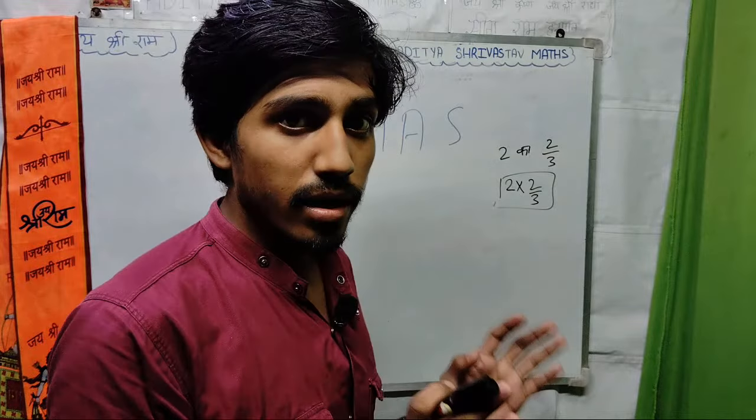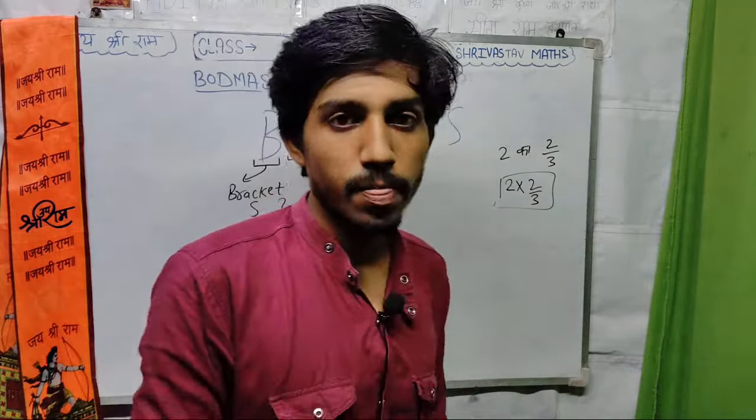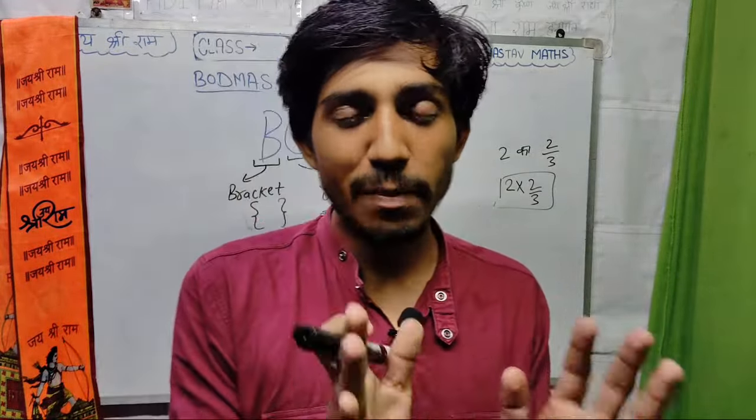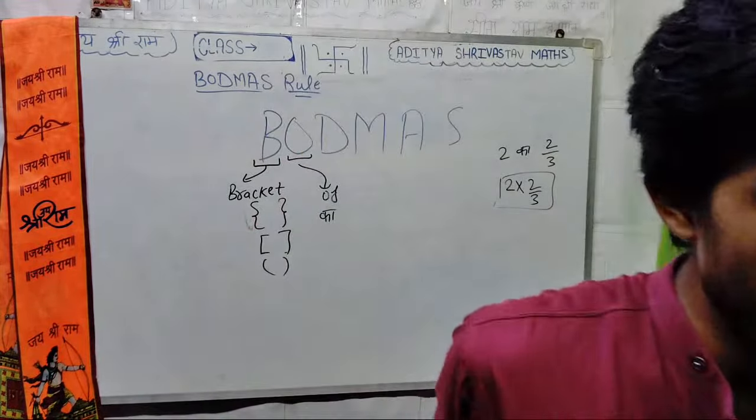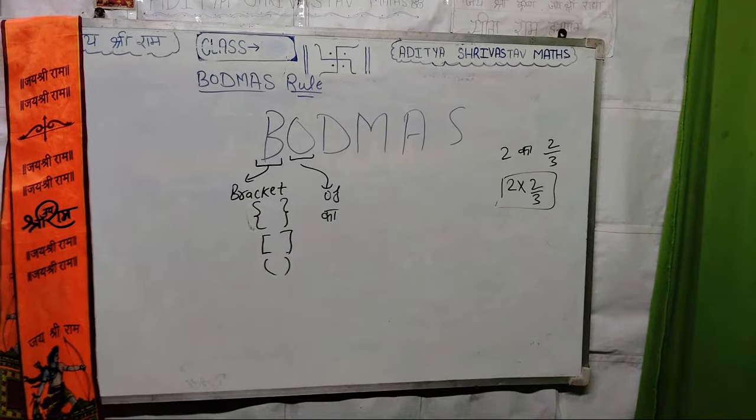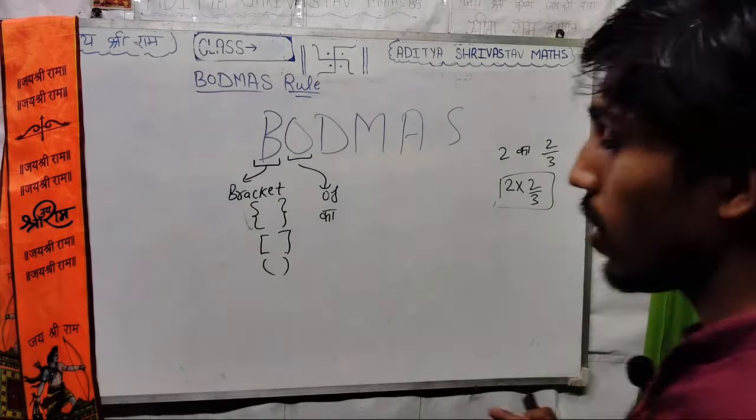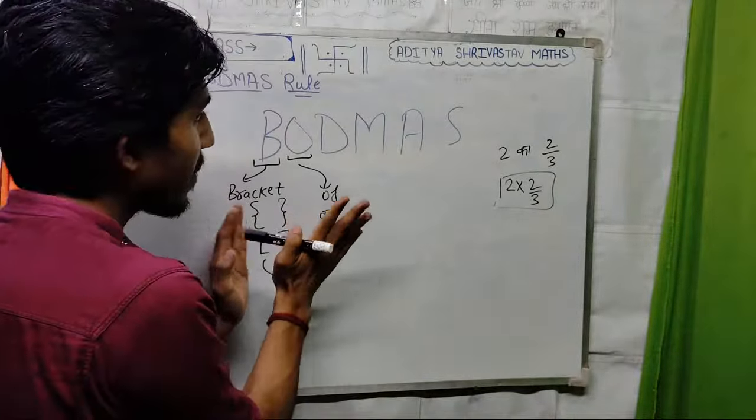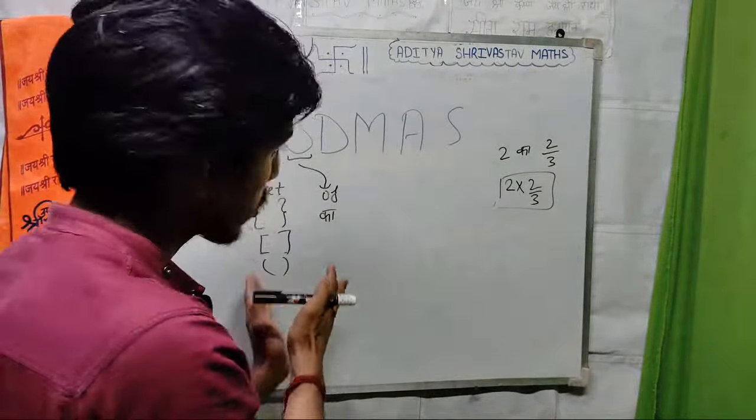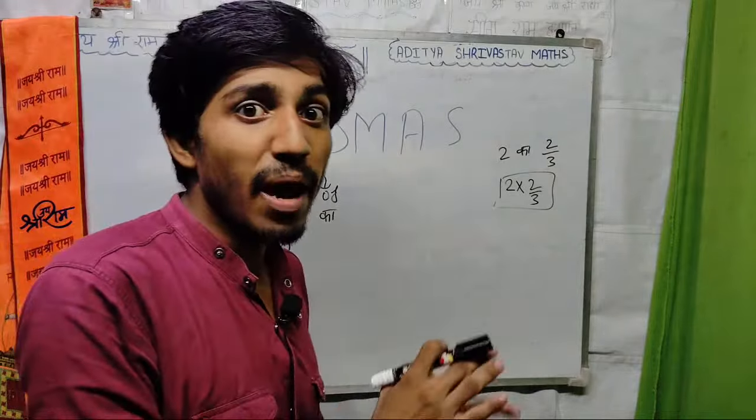But you have to know that if you have written 'of', division and 'of', then you have to solve the multiplication in the next one. There is no doubt that you have to do it a little bit faster.